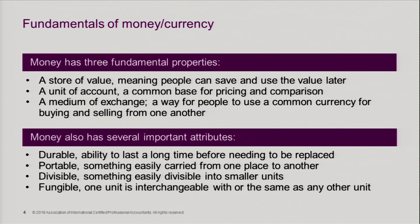We're going to start with the basics because it's really important to come back to what the fundamentals of money and currency are, as this will be a theme throughout the module to understand how it relates to blockchain and Bitcoin. Money has three fundamental properties — picture the money you use today. It's a store of value, meaning people can save and use this value for later use. It's a unit of account, a common base for pricing and comparison. And it's a medium of exchange, a way people use to drive commerce and buy and sell from one another.